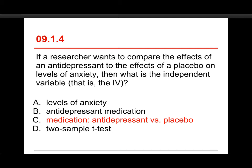Antidepressant medication is simply one level within the independent variable. If you only have one level, that's not a variable, because it's a constant, it's the same for everybody. So, antidepressant is just part of the independent variable. And a two sample t-test is just the inferential test that you would use to compare the scores.